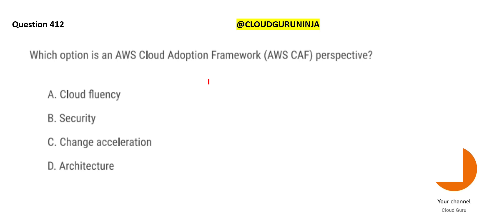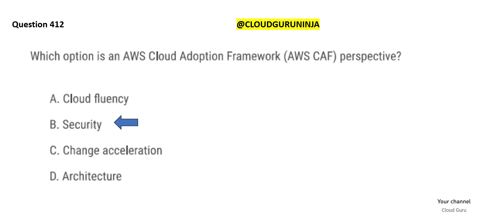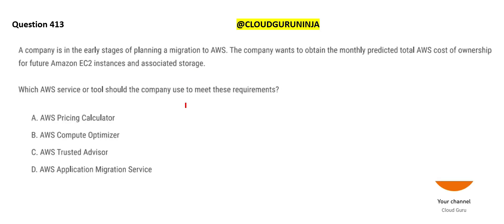Next question: which option is an AWS Cloud Adoption Framework perspective? Looking at the options — cloud fluency, change acceleration, and architecture — these are not standard CAF perspectives. Change acceleration is about how quickly you can make and cascade changes, and architecture is always important, but if we have to choose one answer, we go with Security, which is a recognized CAF perspective.